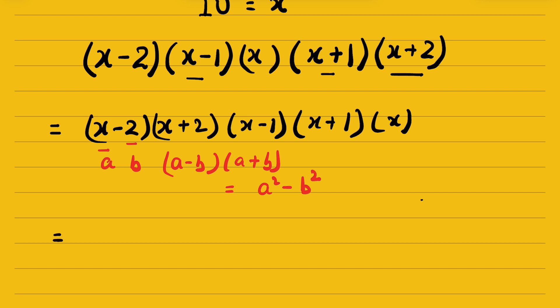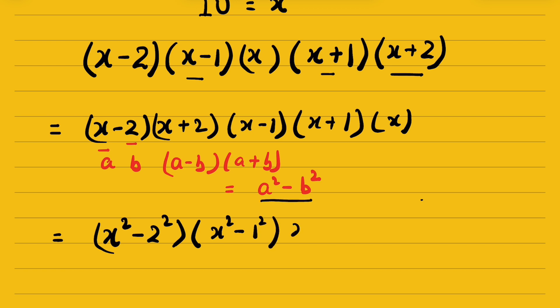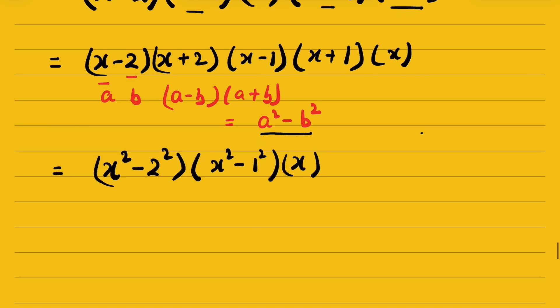So (x minus 2)(x plus 2) becomes x squared minus 2 squared, and (x minus 1)(x plus 1) becomes x squared minus 1 squared, in the form of a squared minus b squared. Then we multiply these two expressions together, along with x.